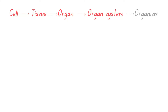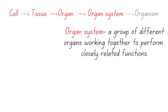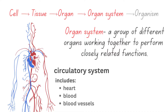Next, we have organ systems. An organ system is a group of different organs working together to perform closely related functions. The circulatory system, for instance, includes the heart, blood, and blood vessels, all working together to transport oxygen, nutrients, and waste products throughout the body.